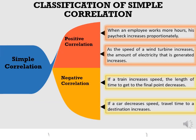Simple correlation is classified into two types: positive correlation and negative correlation. If the two random variables tend to move together in the same direction, it is called positive correlation. For example, as the speed of a wind turbine increases, the amount of electricity generated increases. In negative correlation, two variables move together in the opposite direction. For example, if a car decreases its speed, travel time to a destination increases.